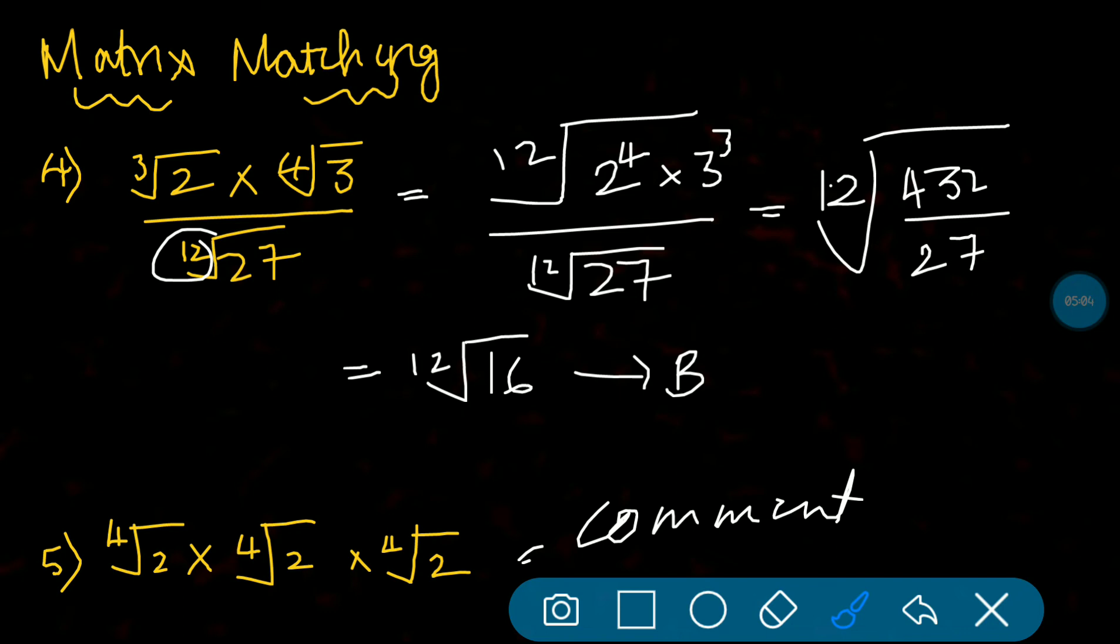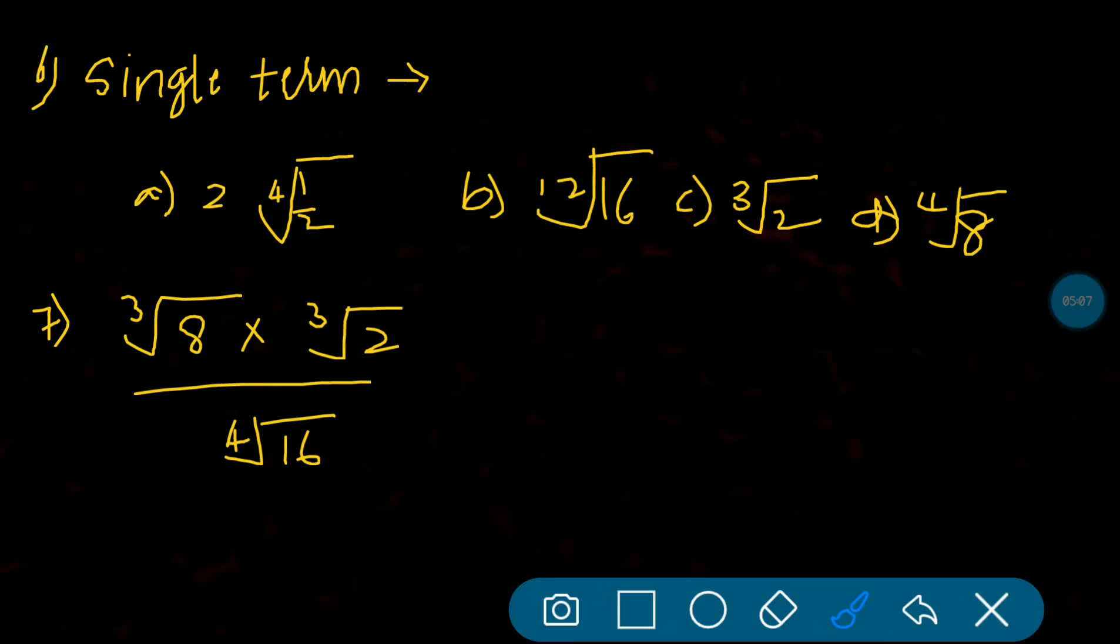Sixth question in matrix matching: A surd consisting of a single term. Now these are the options A, B, C, D. What are your guesses? All are surds which are containing single terms because this is one single term, this is also one single term, single term, and single term. There are no multiple terms. When it is multiple terms it will be having plus or minus. Here you don't find anything in plus or minus, only multiplication is there. Multiplication no problem, it is a single term only. So that is option A, B, C, D.